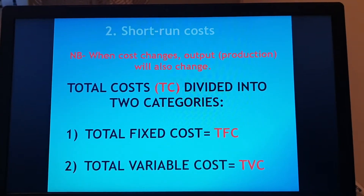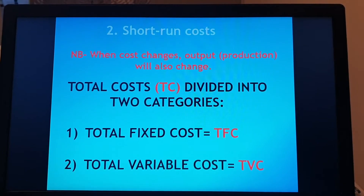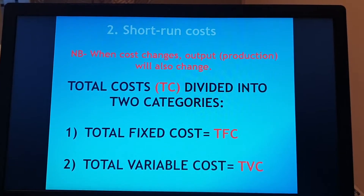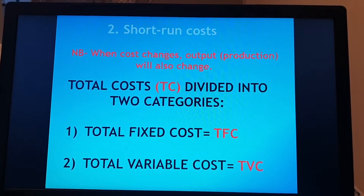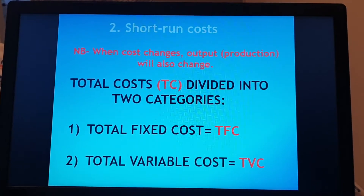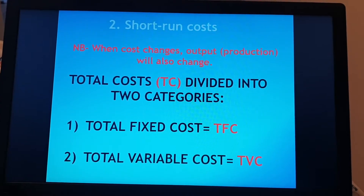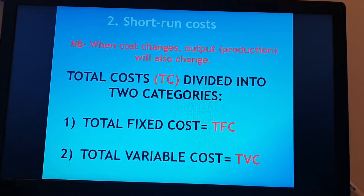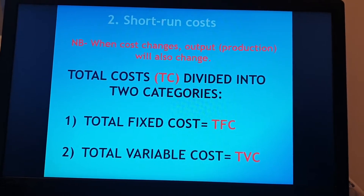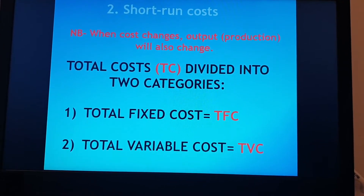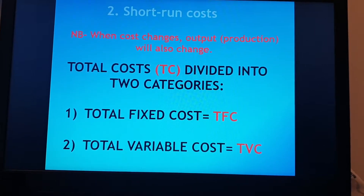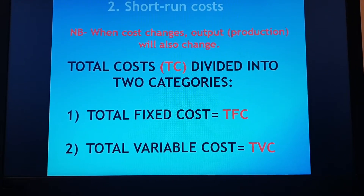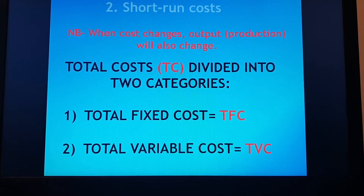Short-run costs are very important. When cost changes, output and production will also change. If it's going to cost me more to produce goods and services, I might produce less; if it costs me less, I'm going to produce more. Total cost (TC) is divided into two categories: TFC, total fixed cost — the cost that stays the same every month like rent — and TVC, total variable cost, which changes every month, for example, production materials bought depending on how many goods are produced.